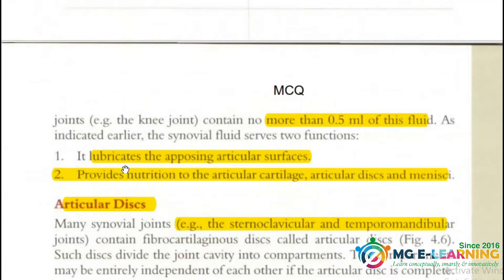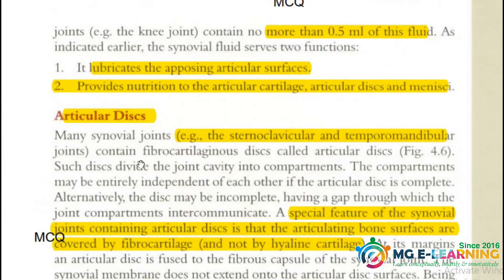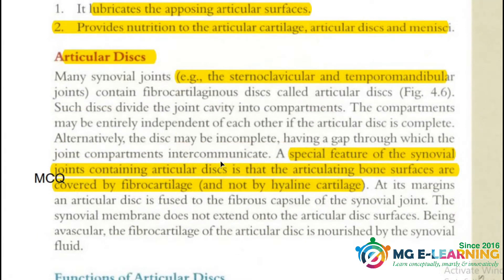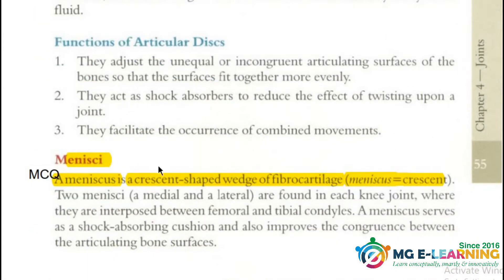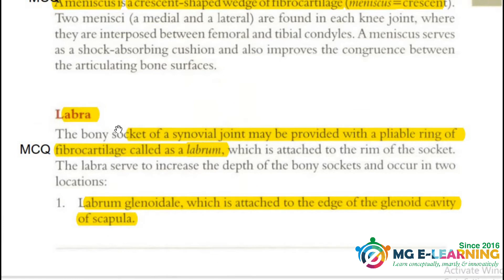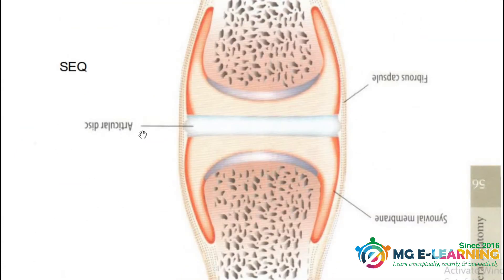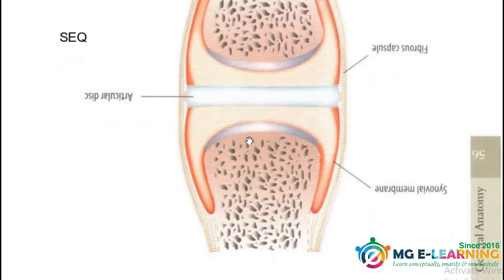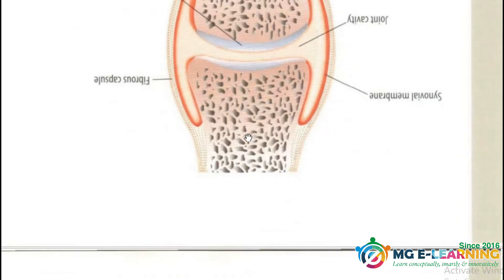Synovial fluid and articular disc are all important. Important MCQ points are written alongside the text, so you must study the highlighted text. Menisci are also present in the structure of the synovial joint, and labra is also part of the structure. You should draw this diagram if you are good at drawing, as it will help you maintain good marks.